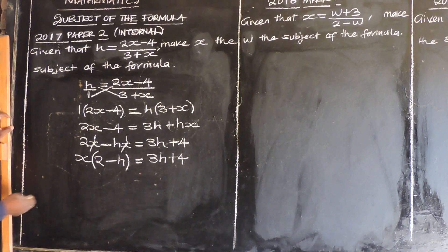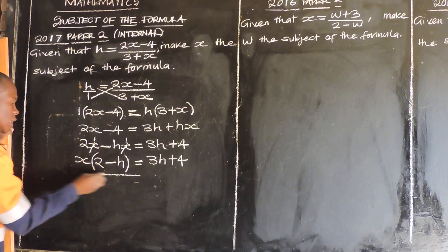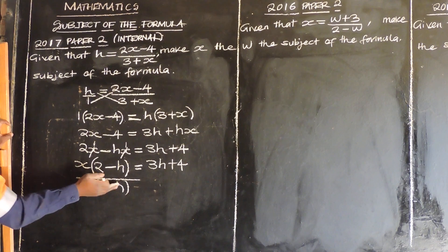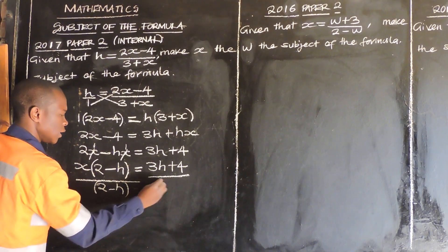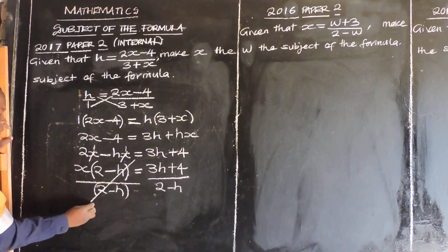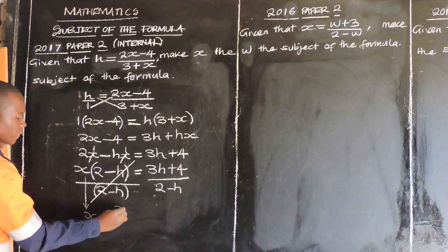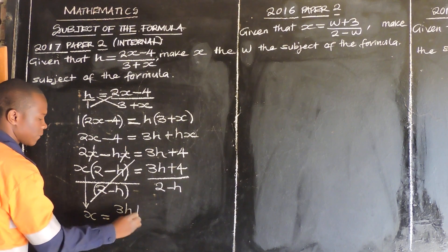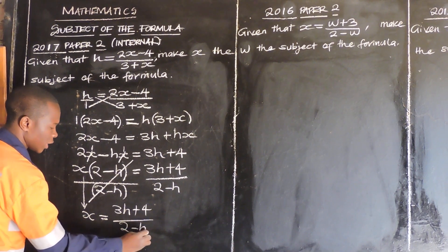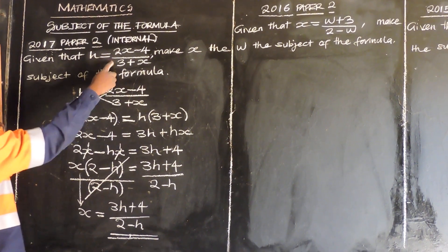Then to isolate x, we need to get rid of the bracket. So we divide both sides by 2 minus h. These two cancel out, giving rise to x. So x is equal to 3h plus 4 over 2 minus h. This is our answer — we've made x the subject of the formula.